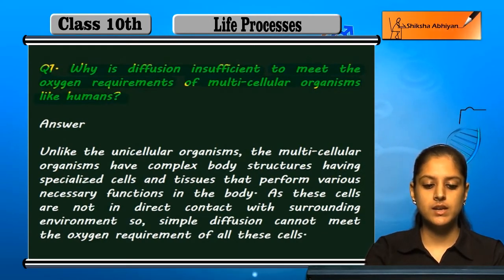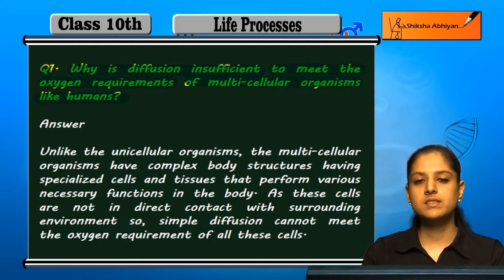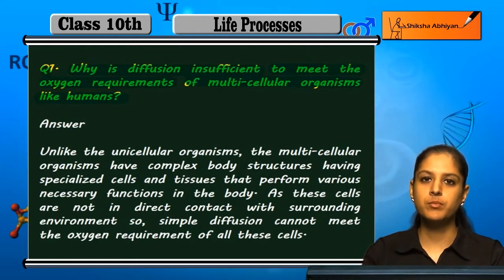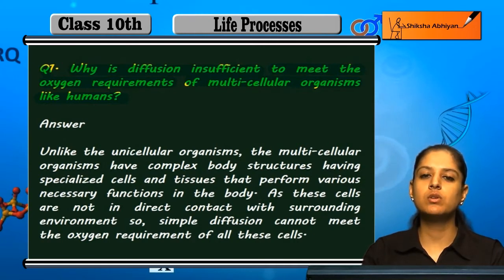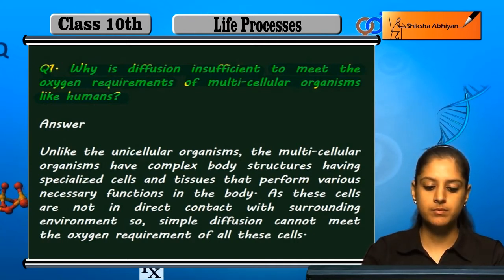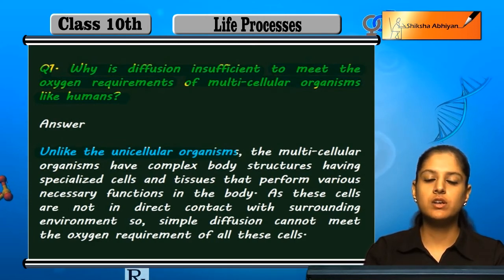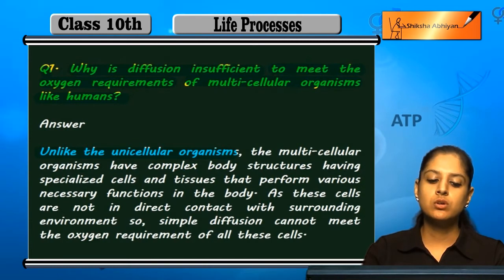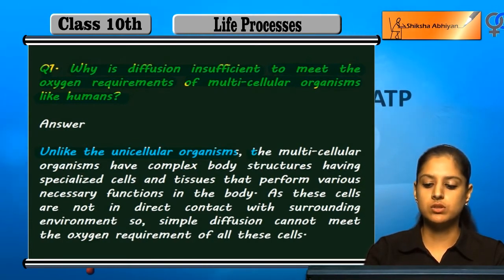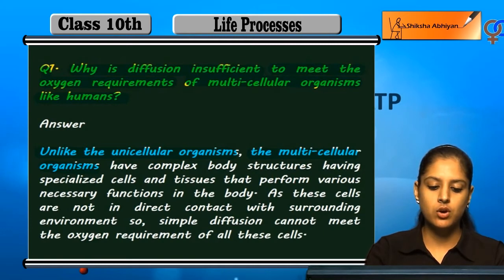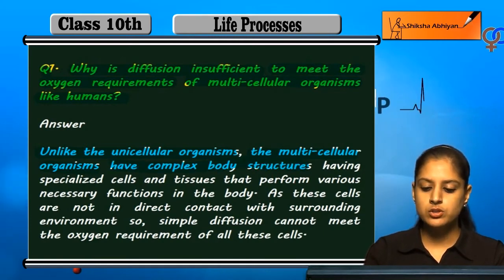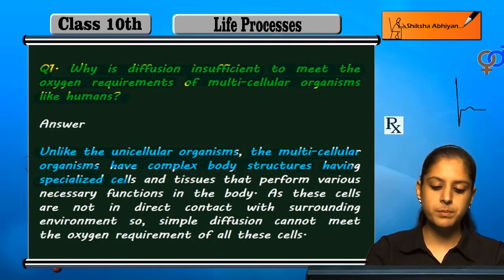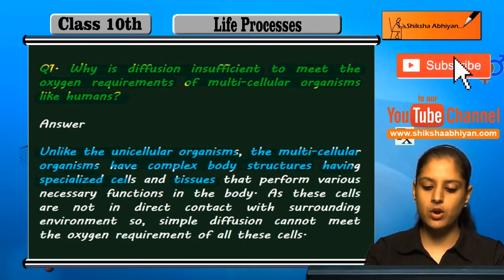Humans ki tarah jo multicellular organisms hootay hain, unmen oxygen ki jo requirement hai usko pura karne ke liye sirf diffusion kyun kumper jata hai — yeh mai batana hai. So jo unicellular organisms hootay hain jinmein ek cell hootay hain, unmen jo oxygen requirements hain woh alag tarike se puri hootay hain. Lakin jo multicellular organisms hain unka jo body structure hootay hain woh complex hootay hain.